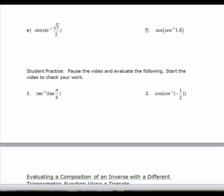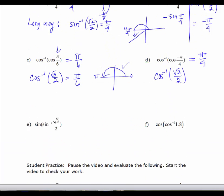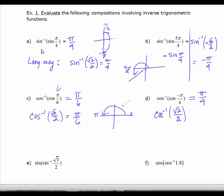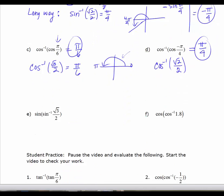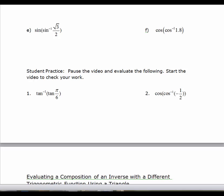Now we have the sine of the inverse sine of √3/2. Notice the outside function is now a trig function, so the answer should be a trig ratio. Since √3/2 is in the range from -1 to 1, and the output values for sine are also from -1 to 1, the answer is simply √3/2. Working it out: the inverse sine of √3/2 is π/3, and the sine of π/3 is √3/2.